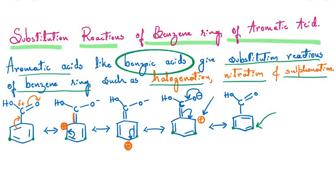Therefore, when benzoic acid undergoes halogenation, the electrophile (the chloronium ion Cl⁺) predominantly attacks the meta position to give a meta-substituted benzoic acid. Similarly, in nitration the nitro group attacks predominantly at meta, and in sulfonation the sulfonyl group is also directed to the meta position.